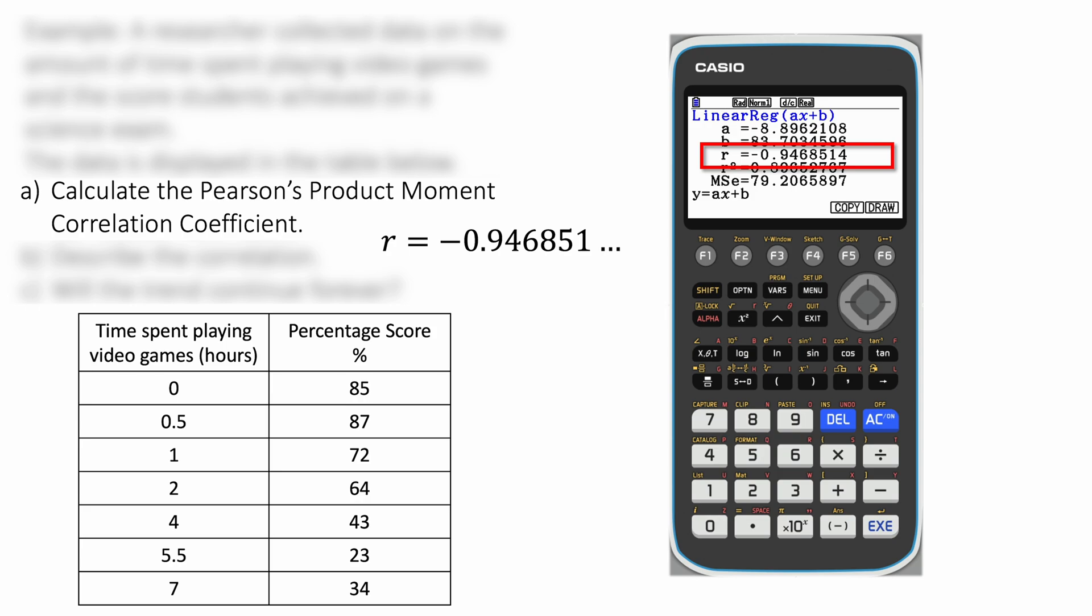Here we are. We have Pearson's product moment correlation coefficient with the symbol r next to it. Here our r value is minus 0.946851. That is how you find Pearson's coefficient on your graphical calculator.